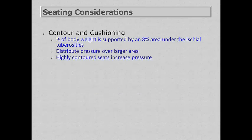Contour and cushioning is very important. Half of the body weight is supported by an eight percent area of the ischial tuberosities, so cushioning helps distribute pressure over a larger area. Generally, highly contoured seats can increase the pressure of the seating system. The upholstery material matters — particularly if people work in very hot, humid areas, you want breathable material. For longevity of the chair, wear is important, and don't forget to ask people what color they want.